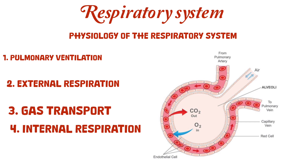The respiratory centers in the medulla oblongata and the pons control the rate and depth of breathing. These centers monitor the levels of carbon dioxide, oxygen, and pH in the blood. When carbon dioxide levels rise, the brain increases the breathing rate to remove it; when oxygen levels fall, breathing also increases to bring in more air. This feedback mechanism ensures the body maintains a stable internal environment, a process called homeostasis.